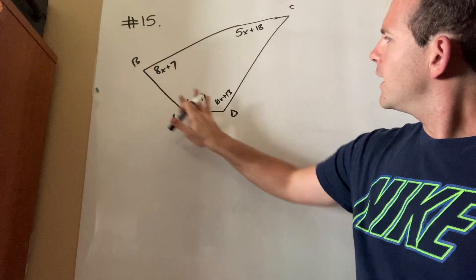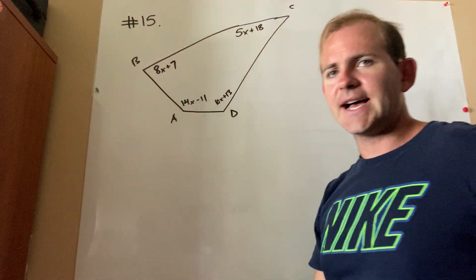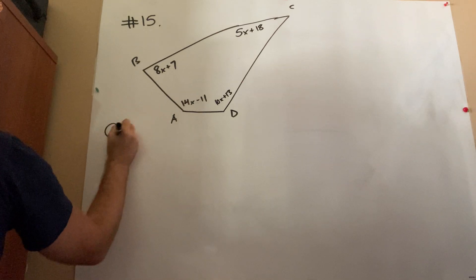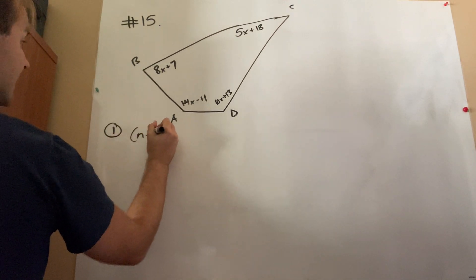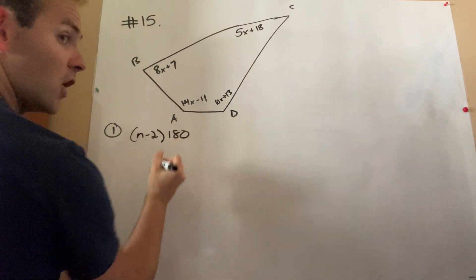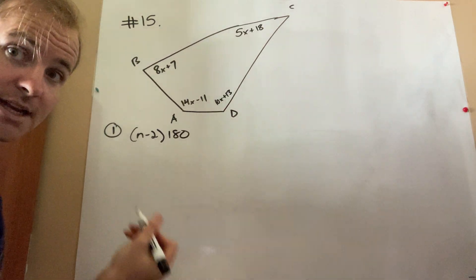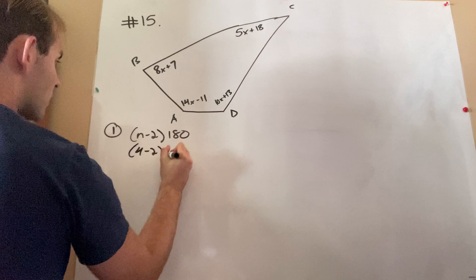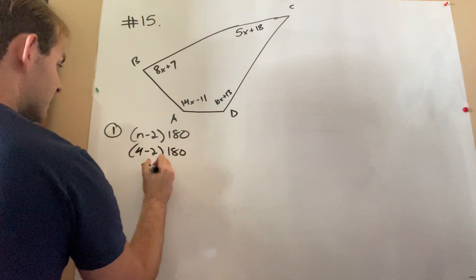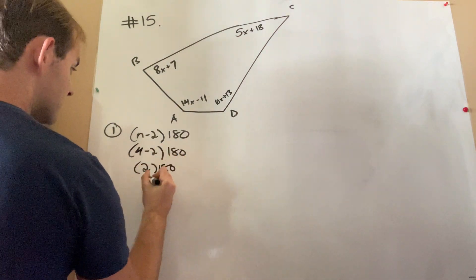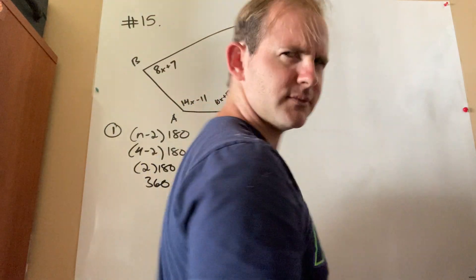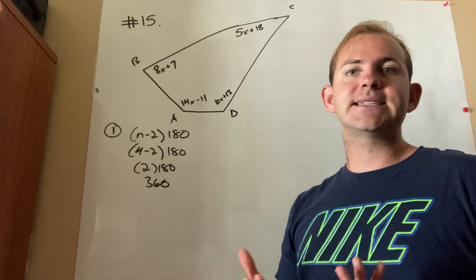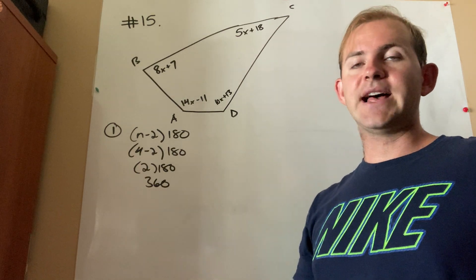Well, it has 1, 2, 3, 4 sides. That makes it a quadrilateral, right? So, step 1 here would be as follows. I need to figure out how many degrees are inside the figure. So, I'm going to use n minus 2 times 180, plug in 4 for n, 4 minus 2 is 2, and 2 times 180 is 360. So, what I've established here is that there are 360 degrees inside a quadrilateral.